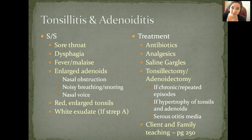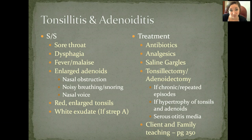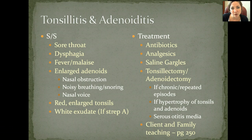If it's chronic or repeated — meaning it happens often — or if there's hypertrophy of the tonsils and adenoids, or if you have serious ear infections as a result of the tonsillitis and adenoiditis, we'll probably go ahead and take out the tonsils and the adenoids. The client and family teaching for this is in your book on page 250.